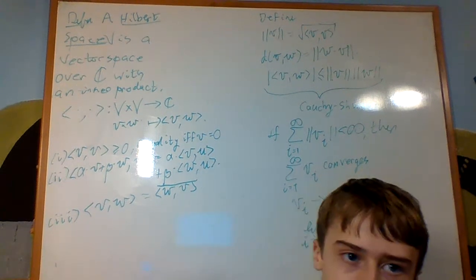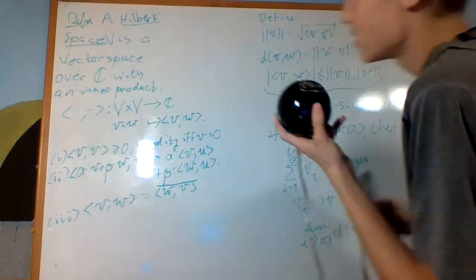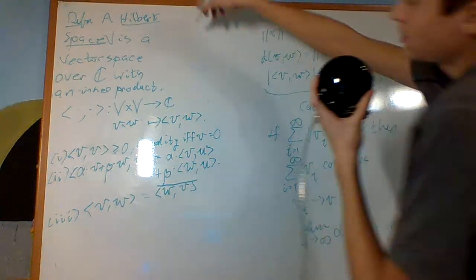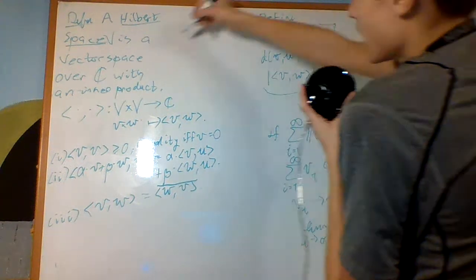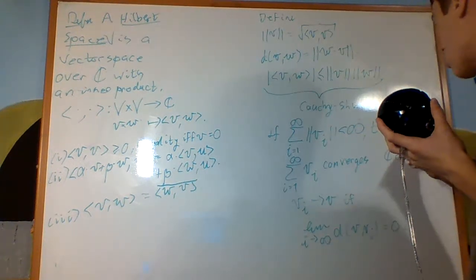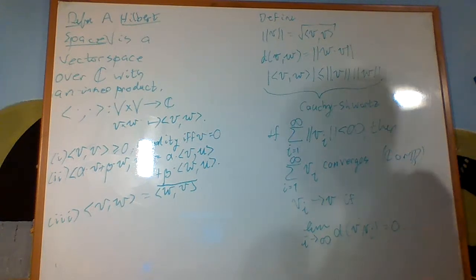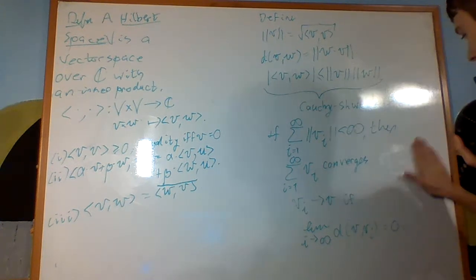And so that's a Hilbert space. It's an example of what is called a Banach space, which is precisely just a vector space over C or R. It can be over C or R instead of just C.